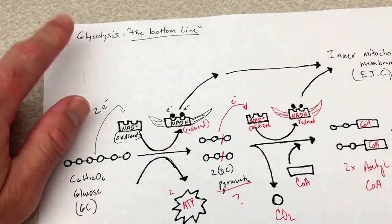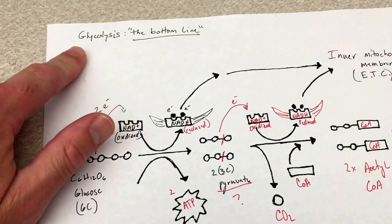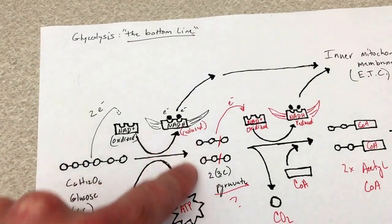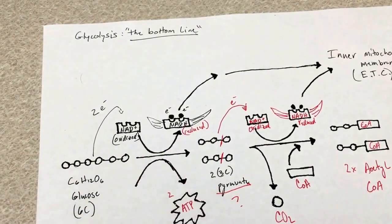Just a brief review of what we just looked at: we looked at the first process of cellular respiration, glycolysis, and we looked at the bottom line. Glucose, a six carbon molecule, is split in half to create two three carbon molecules of pyruvate.